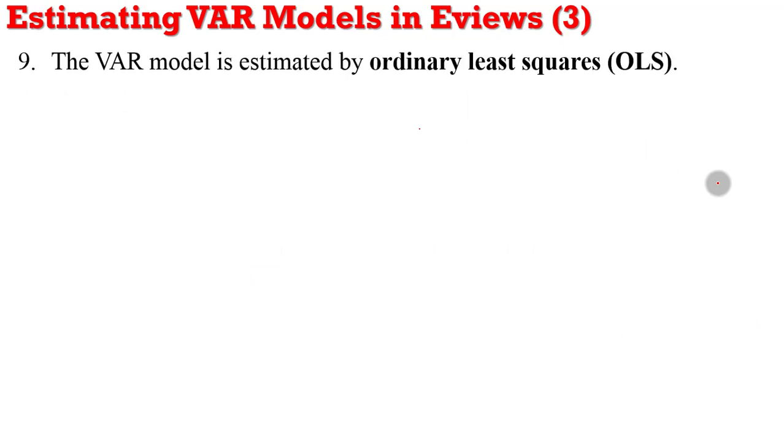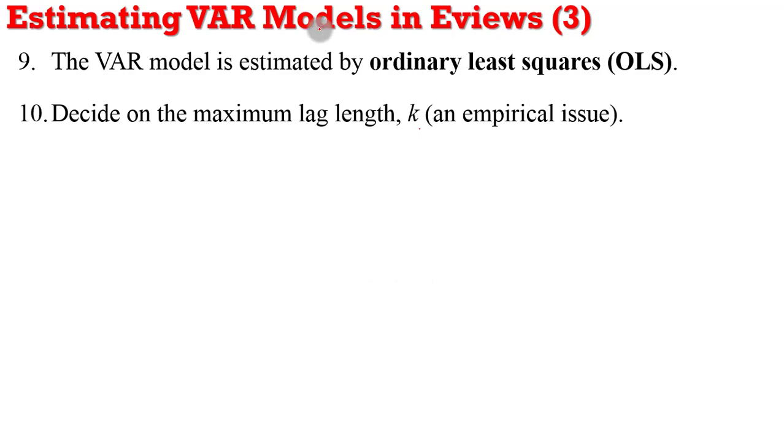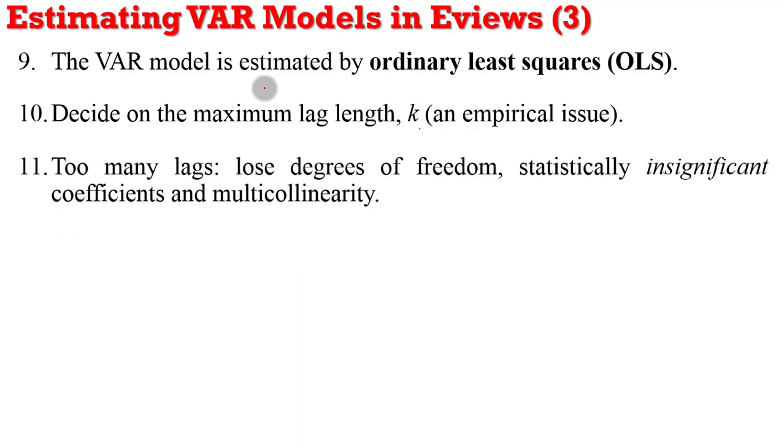The VAR model is estimated by ordinary least squares. You have to decide on your maximum lag length, k, which in this case is an empirical issue. And why do I say so? If you have too many lags, you lose degrees of freedom. Most of your coefficients may become statistically not significant due to the presence of multicollinearity. Also, if you have too few lags, you may end up incurring some specification errors.